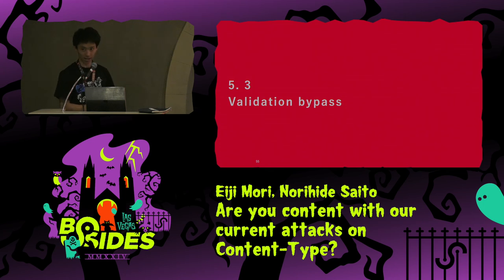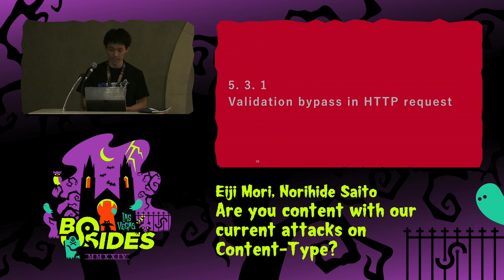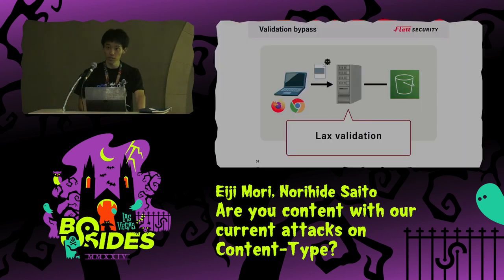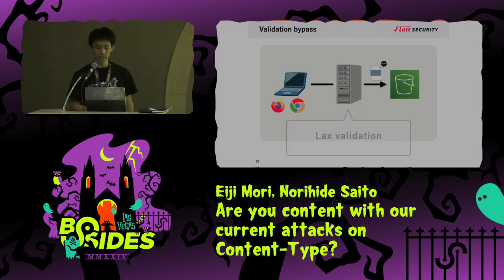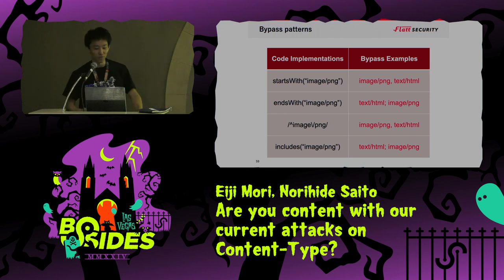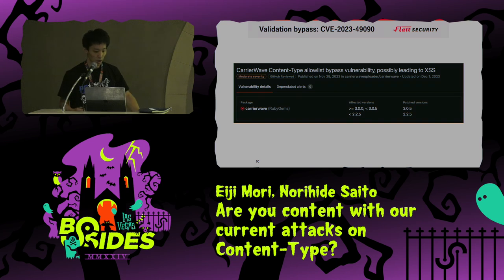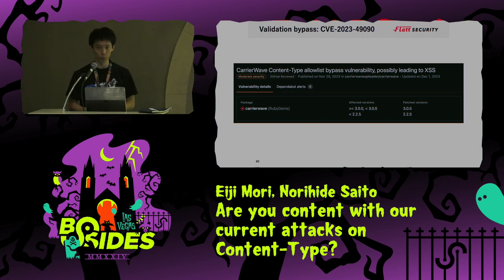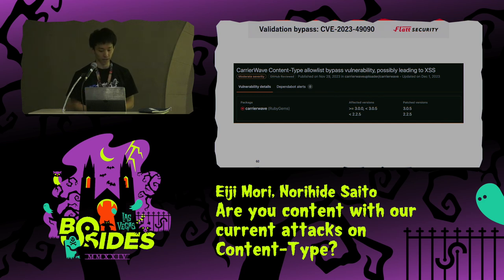Next, the validation bypass pattern in HTTP request. Even if there are validations using content type strings when a malicious file is uploaded, they are often easily bypassed due to lax validation — such as starts-with, ends-with, and regex includes. You can see the document presented at BSides Tokyo for more information on this bypass technique. CarrierWave is the most famous file upload library on Ruby on Rails. CarrierWave had a problem with content type restriction logic that could be bypassed, so any content type could be specified in the HTTP response.